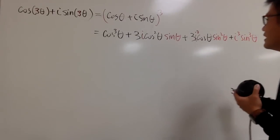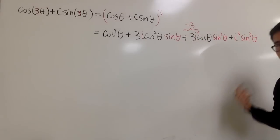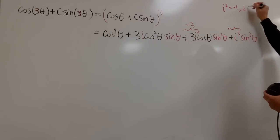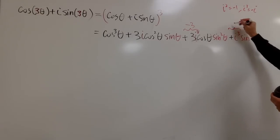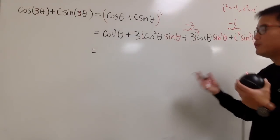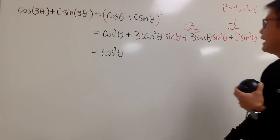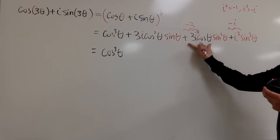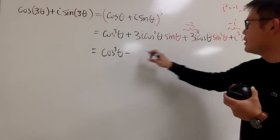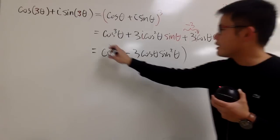Now we just collect the terms. The coefficients are 1, 3i, 3i², and i³. Since i² equals negative 1, the 3i² term becomes negative 3. And since i² equals negative 1, i³ equals negative i — just multiply both sides by i. So that term becomes minus i. Now let's collect all the real parts — the parts without i. We have cosine cubed theta, and then minus 3 cosine theta times sine squared theta. This is the real part.